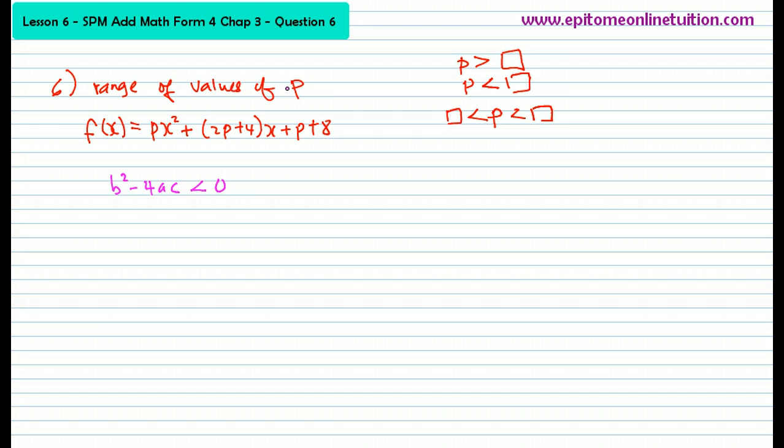So now you're looking for range of values of P. So if you were to extract the a, the b, and the c from your quadratic function and put it inside b squared minus 4ac less than 0, you would have found the range of values of P. Can you understand the flow of logical thinking in this case? Okay, so now let's put in one by one.